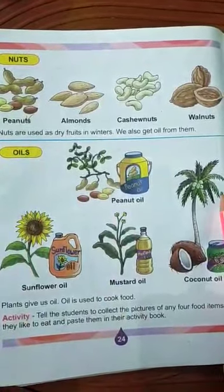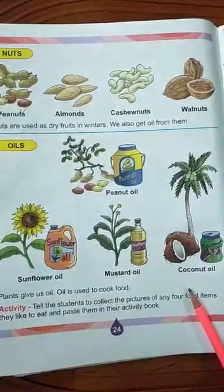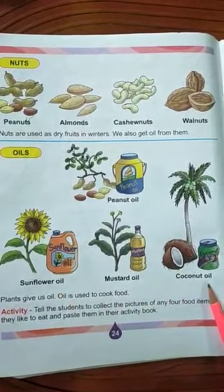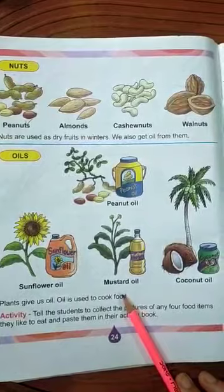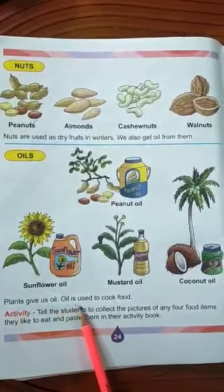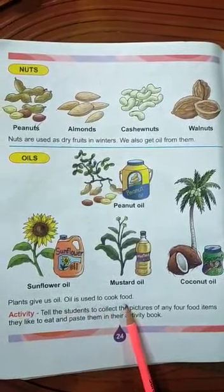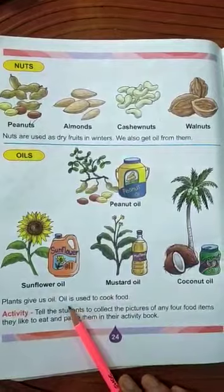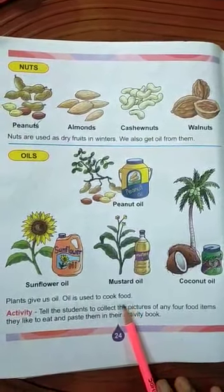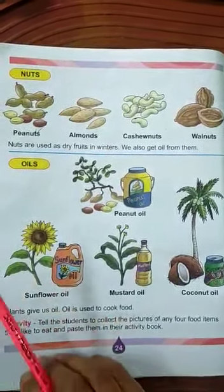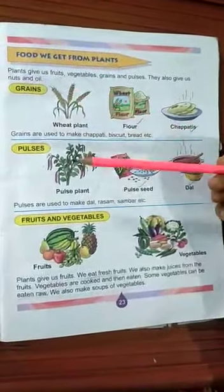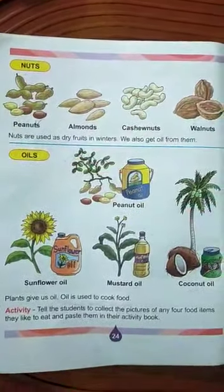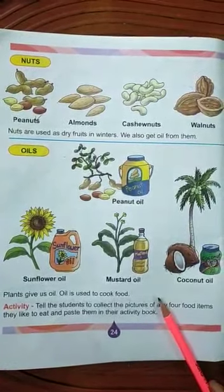आगे देखते हैं oils — हमें plants से peanut oil, sunflower oil, mustard oil, और coconut oil मिलते हैं। Plants give us oil, and oil is used to cook food। तो plants से हमें grains, pulses, fruits, vegetables, nuts और oils प्राप्त होते हैं। हमें medicines भी plants से मिलती हैं।